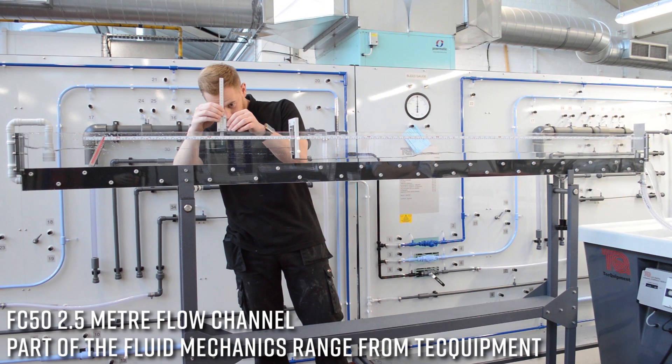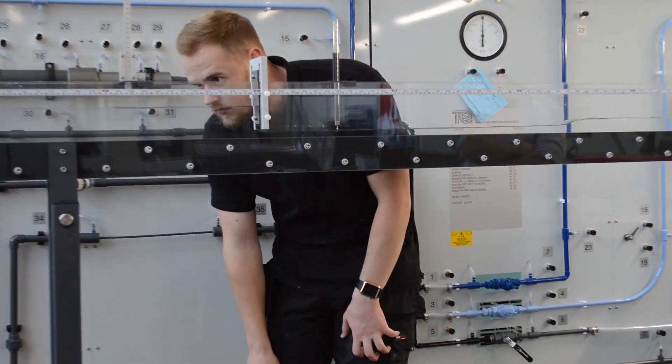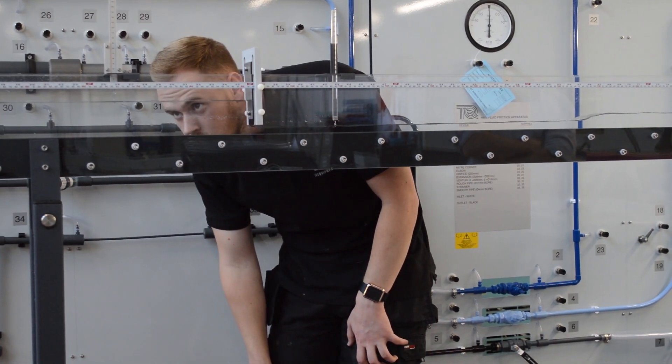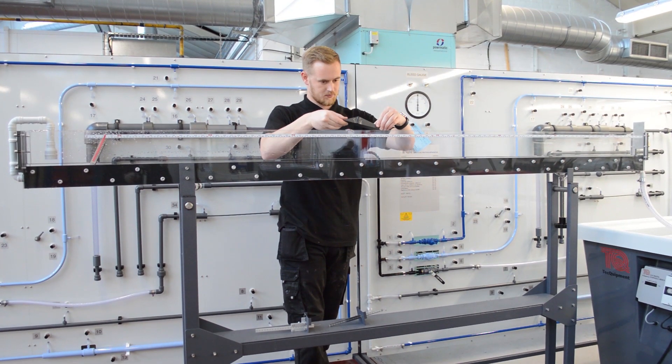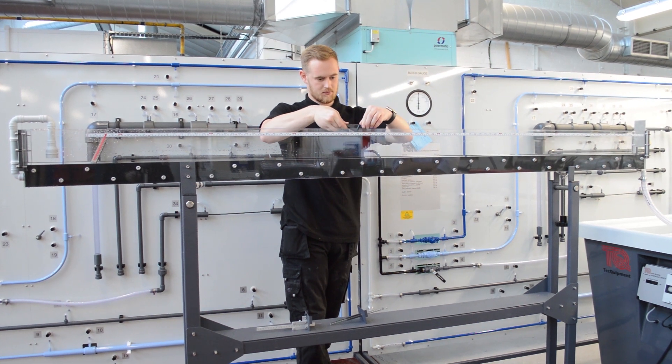With the FC50 2.5m flow channel you can study the difference in flow measurement between various weirs and gates, examining phenomena such as hydraulic jump and calculate energy and discharge coefficients.